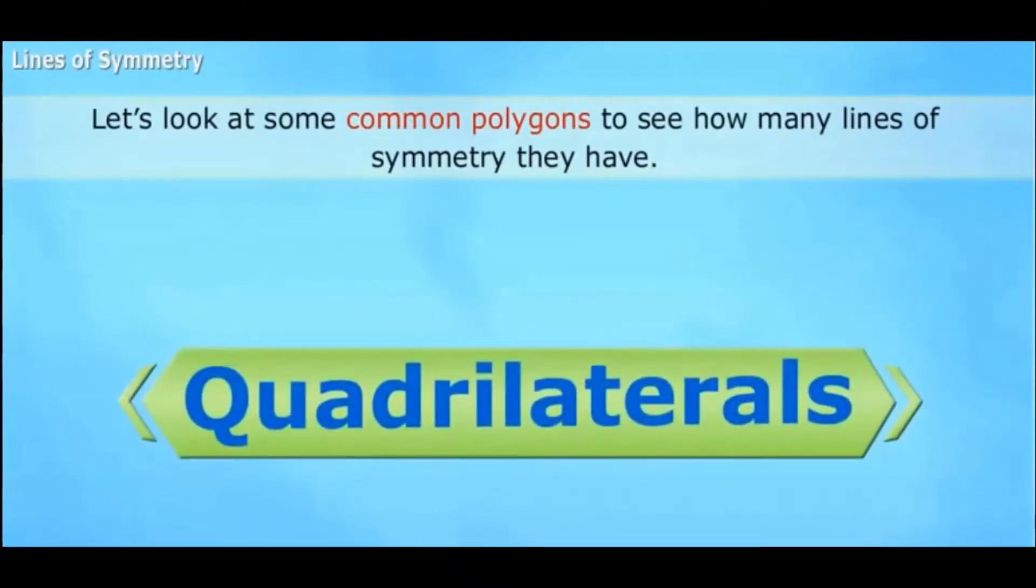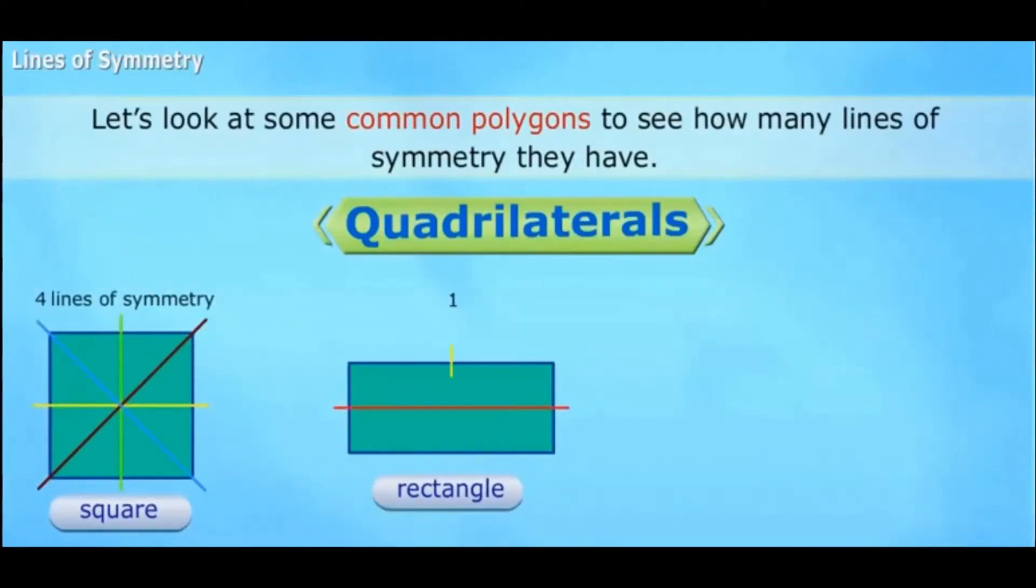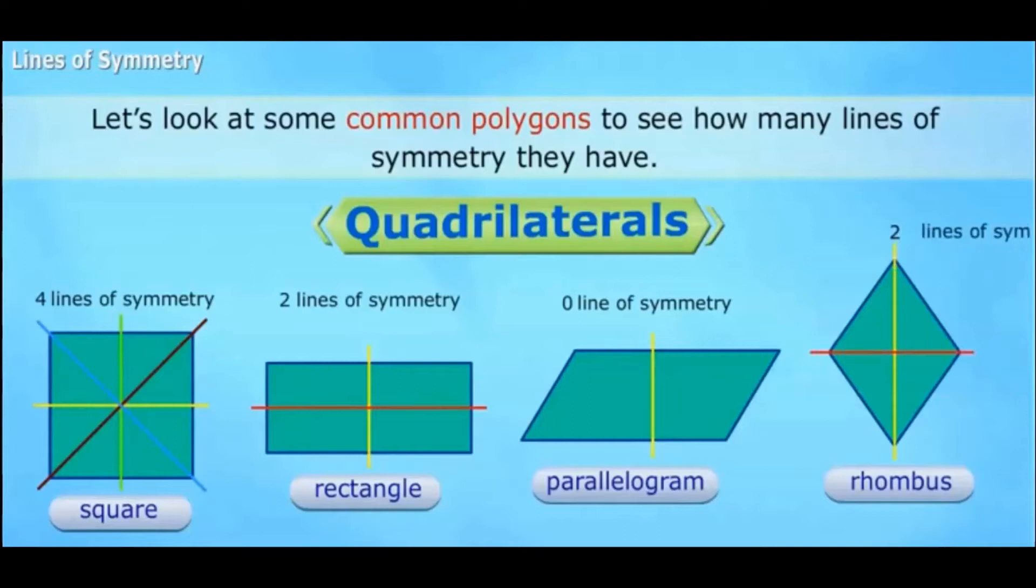Quadrilaterals. Different quadrilaterals have different lines of symmetry. A square has four lines of symmetry: 1, 2, 3, and 4. A rectangle has two lines of symmetry: 1, 2. A parallelogram has no lines of symmetry. That's not a line of symmetry. A rhombus has two lines of symmetry: 1, 2.